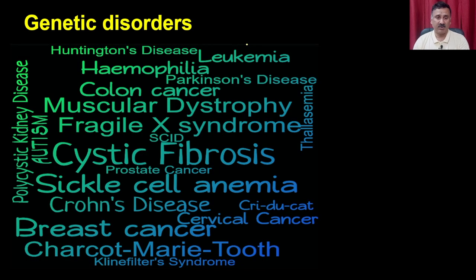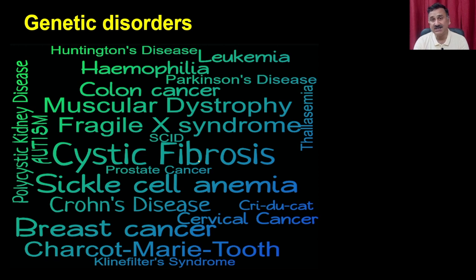In today's lecture, we are going to discuss about the application of molecular biology in the context of correcting genetic diseases. We have different types of genetic diseases found in human populations: Huntington disease, hemophilia, Parkinson disease, colon cancers, and many others. Humans are managing these diseases through different therapeutic options. One option is to generate drugs that overcome the deficiency or take care of detoxification.